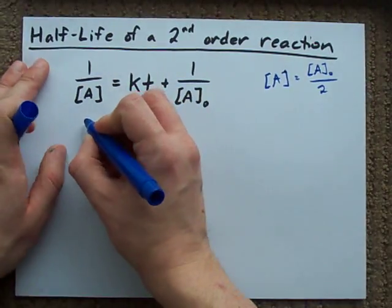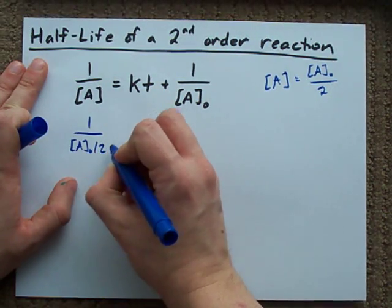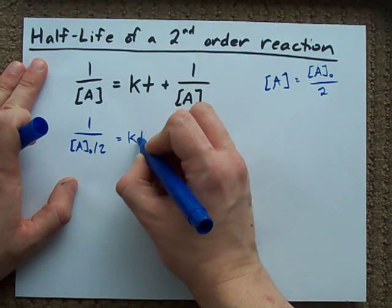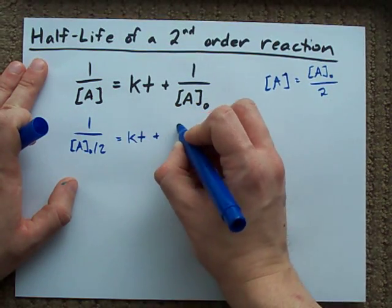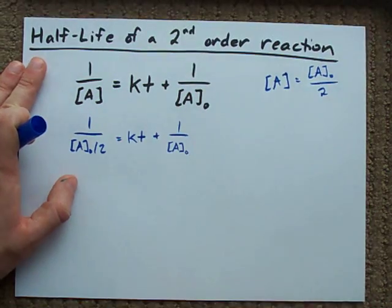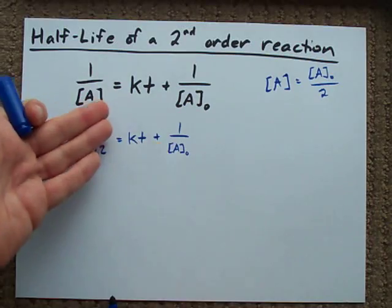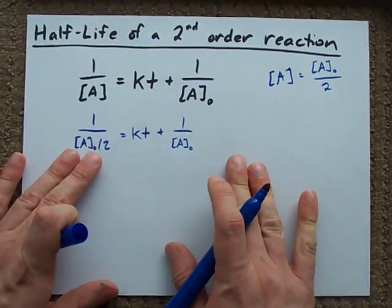What I'm going to do here is replace my concentration with initial concentration divided by 2 so that this T represents my actual half-life. Now, all I need to do is solve for T, and I will have the equation for half-life of a second-order reaction.